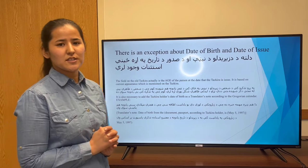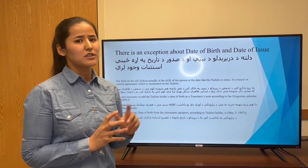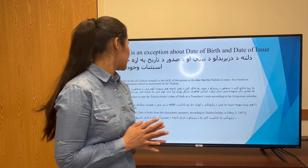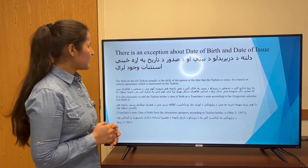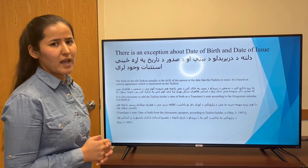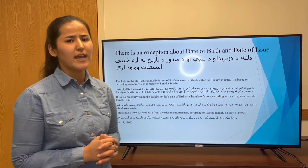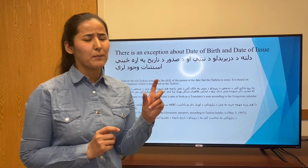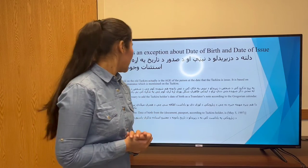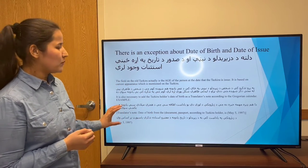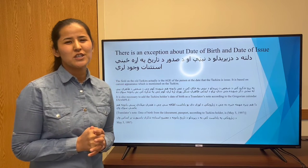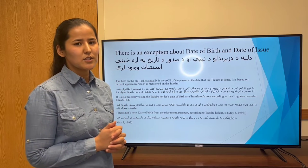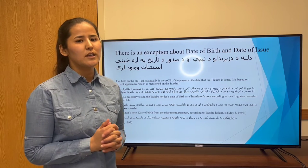The translator can convert the date of birth from Islamic Solar calendar to Gregorian calendar. There is an exception about date of birth and date of issue. In Afghan TASKRA, the date of birth is mentioned according to the person's appearance on the date of issue. For example, the date of birth may be mentioned as '22 years old as of 1399,' so the translator should convert that to the Gregorian calendar.